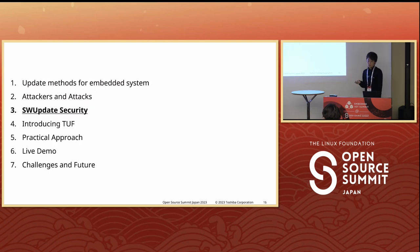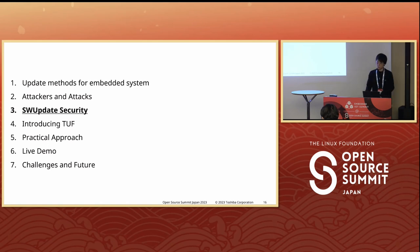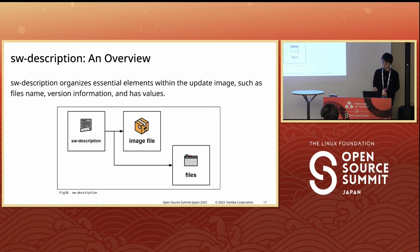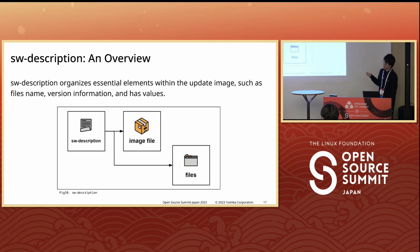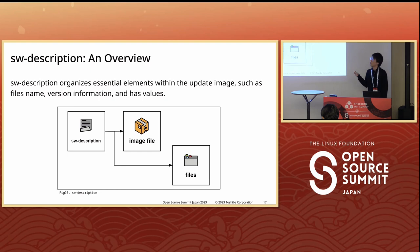SW Update implements signing and verification to counter these seven attacks. For signing and verification, SW Update uses SW description. SW description indicates the content of the update image. It lists image files and organizes essential elements within the update image, such as file name, version information, and hash value.